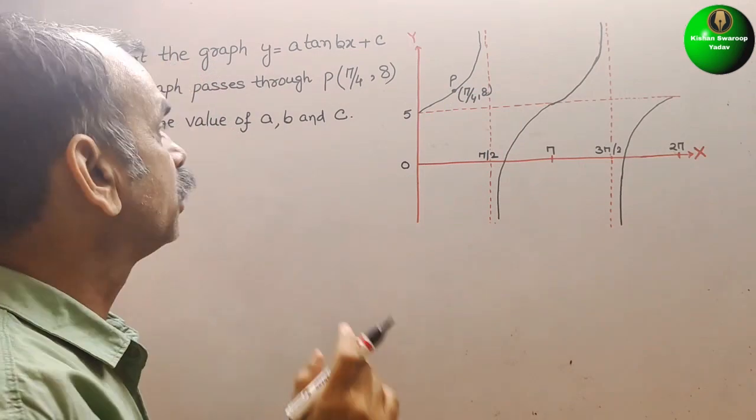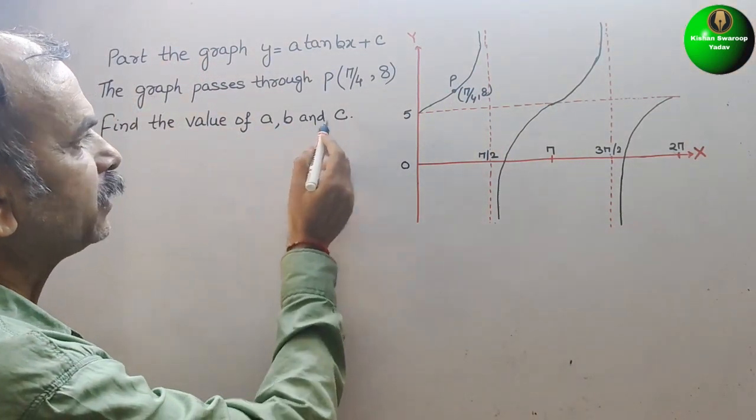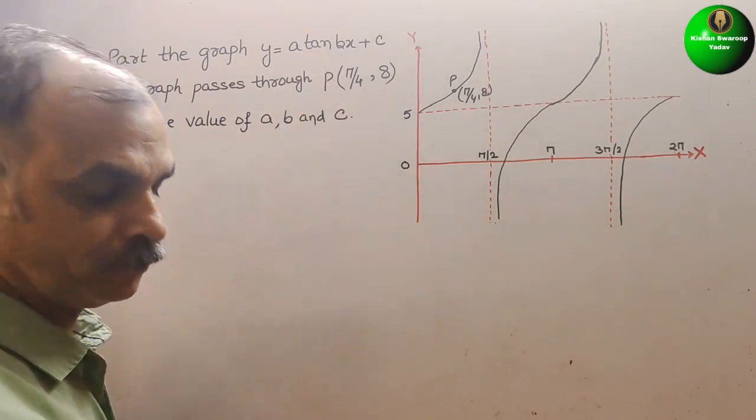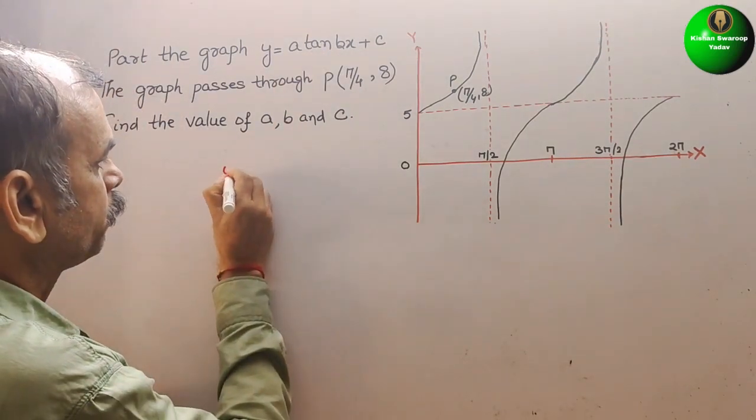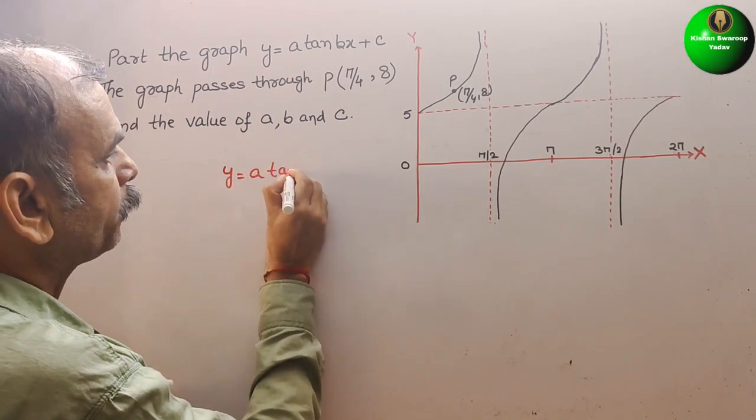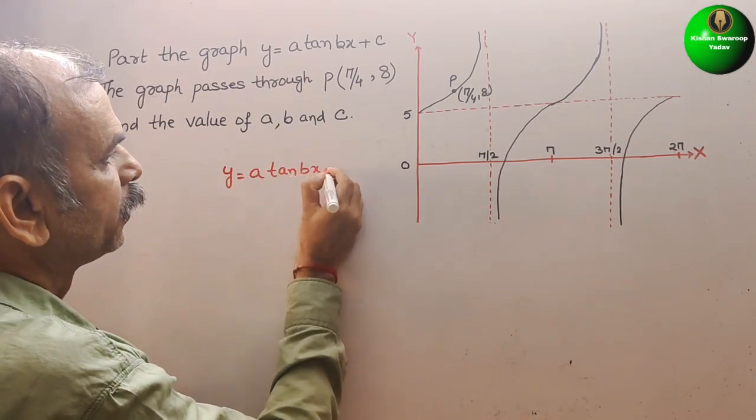Now we have to find out our a, b and c. Just we will write what they have given here. That is your y is equal to a tan bx plus c.